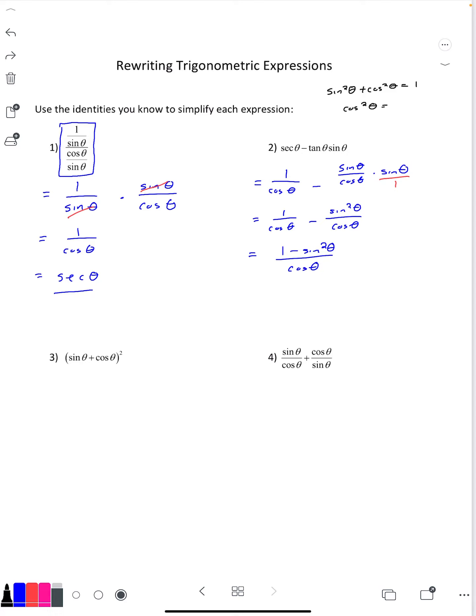If you subtract sine squared theta on both sides, you'll see that one minus sine squared theta is the same as cosine squared theta. So that numerator I can replace with cosine squared theta.